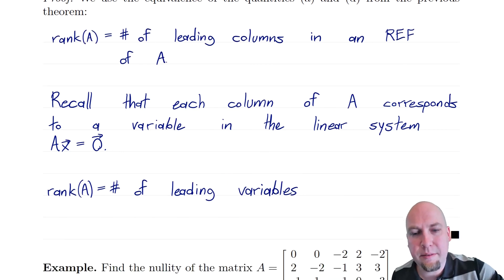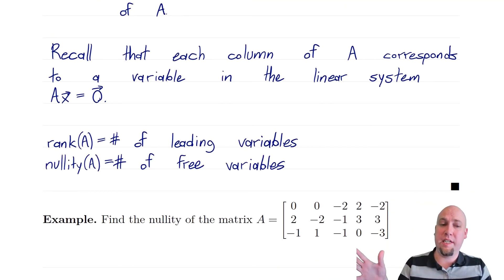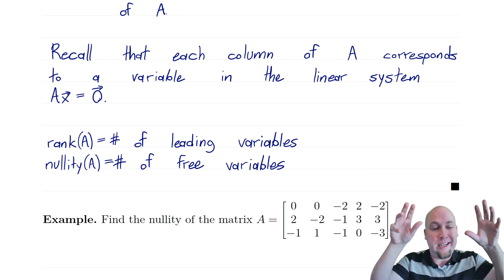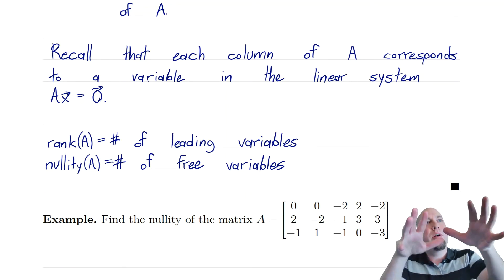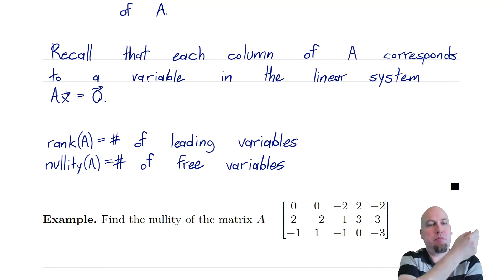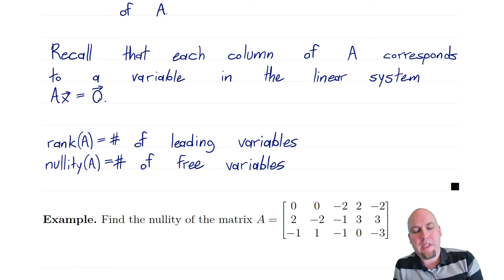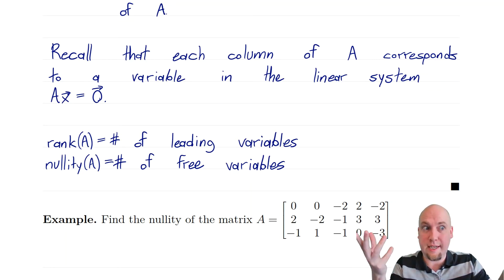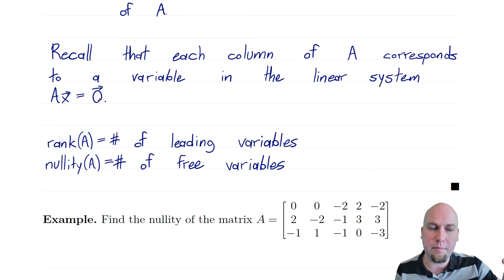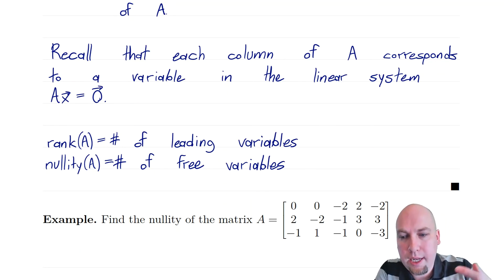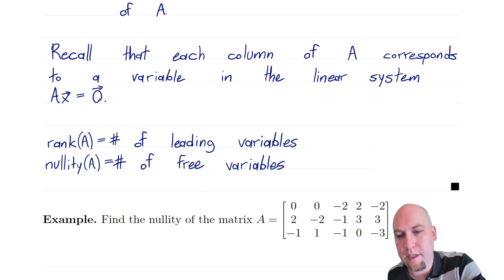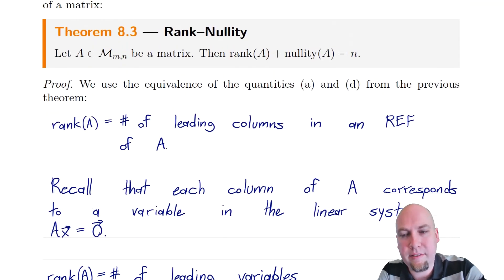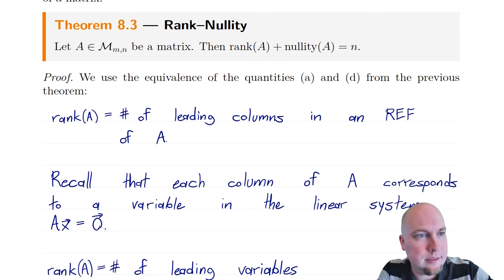The rank is the number of leading variables in the linear system Ax=0. Similarly, the nullity of a matrix is the number of free variables in that same linear system Ax=0. The reason is: when we computed a basis of the null space, we factored out the solution set as a sum of free variable times vector, and each free variable contributed exactly one basis vector. So the dimension of the null space — the nullity — equals the number of free variables. Then, since every variable is either free or leading, and there are n variables total, the number of free variables plus the number of leading variables equals n. In other words, rank plus nullity equals n.